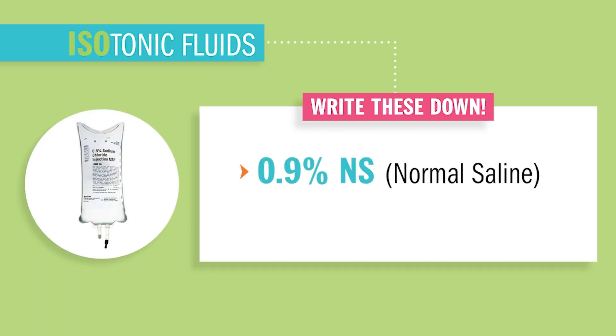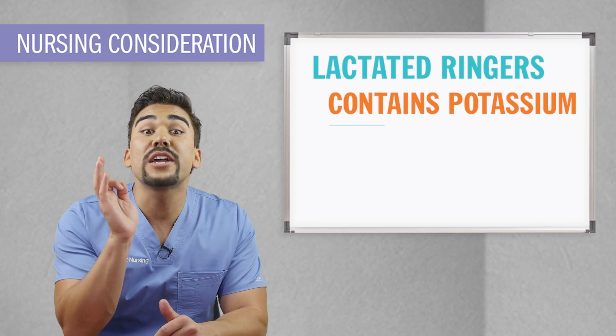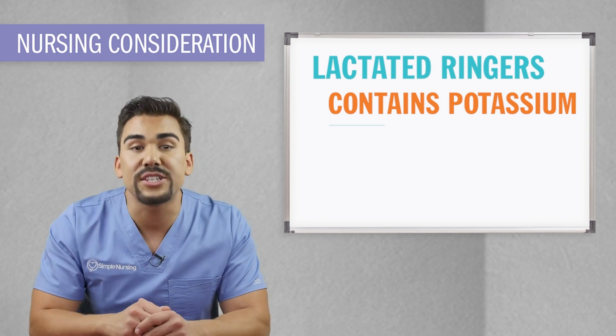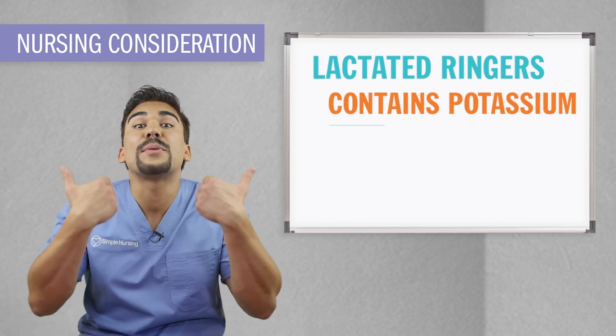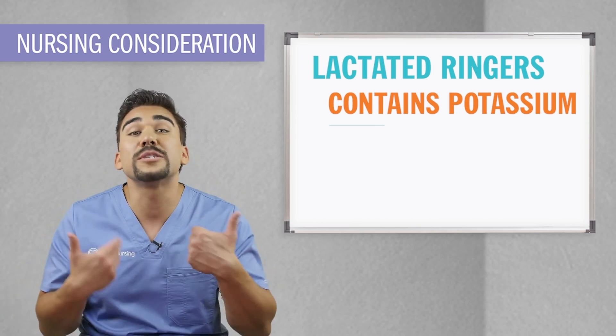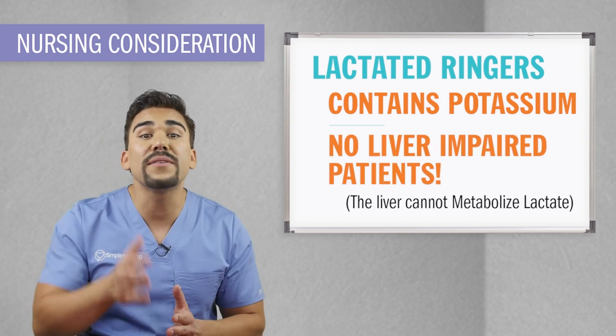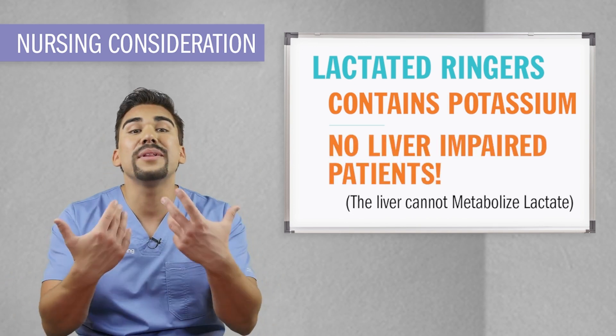Lactated ringers contain potassium, so be cautious with your renally impaired patients — this could cause hyperkalemia, basically too much potassium. Also no liver impaired patients — the liver cannot metabolize lactate when it's impaired, so don't administer to patients with cirrhosis or any other liver conditions. And as mentioned before, D5W is isotonic in the bag and hypotonic in the body — sugar is metabolized by the cells and all that's left is hypotonic.